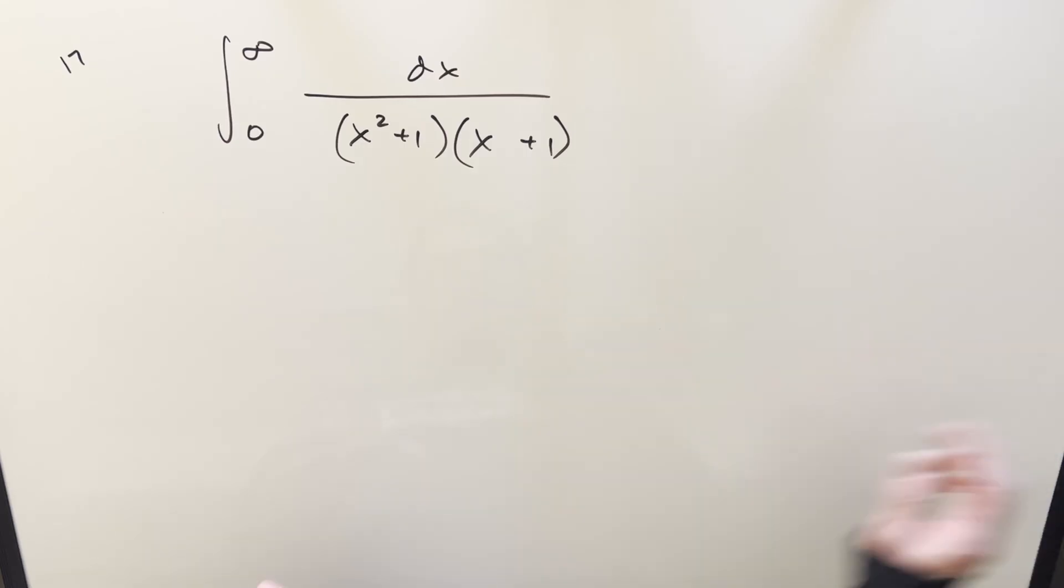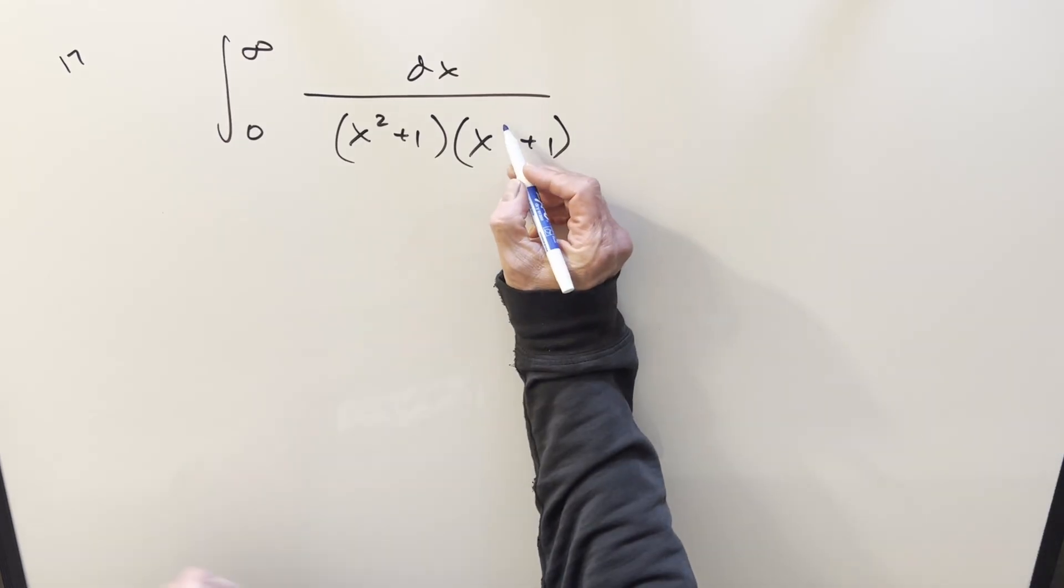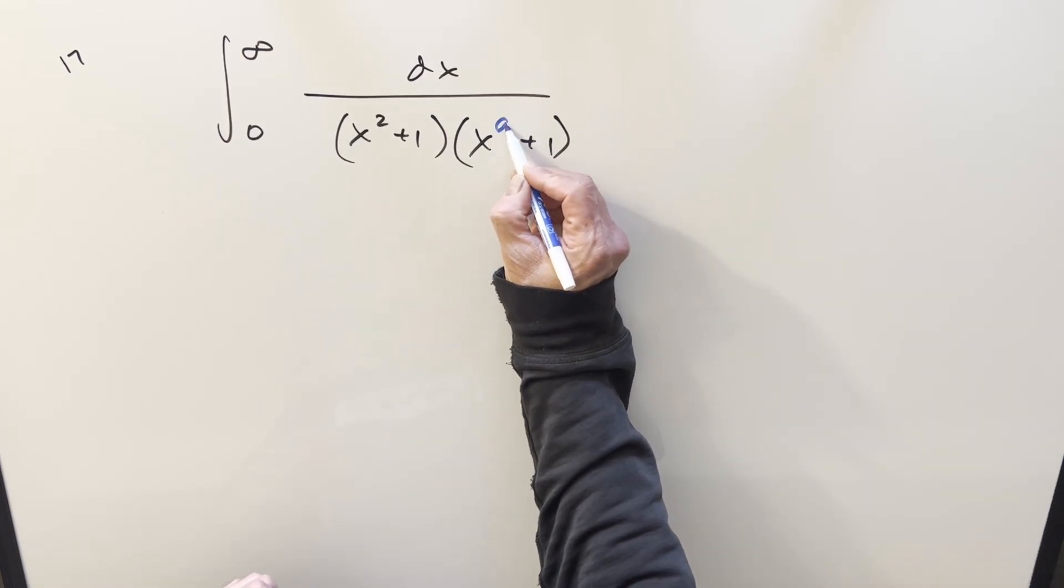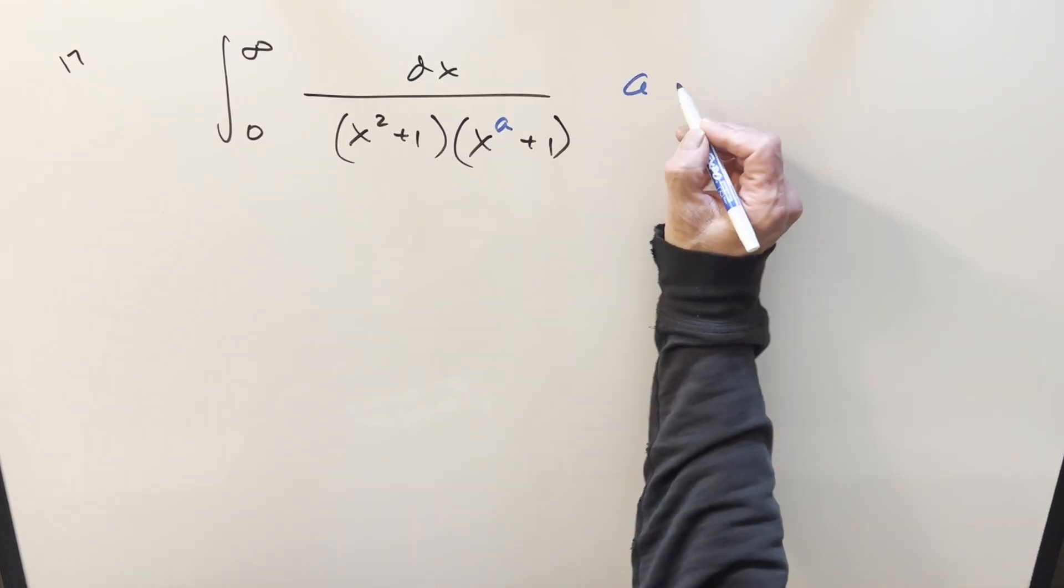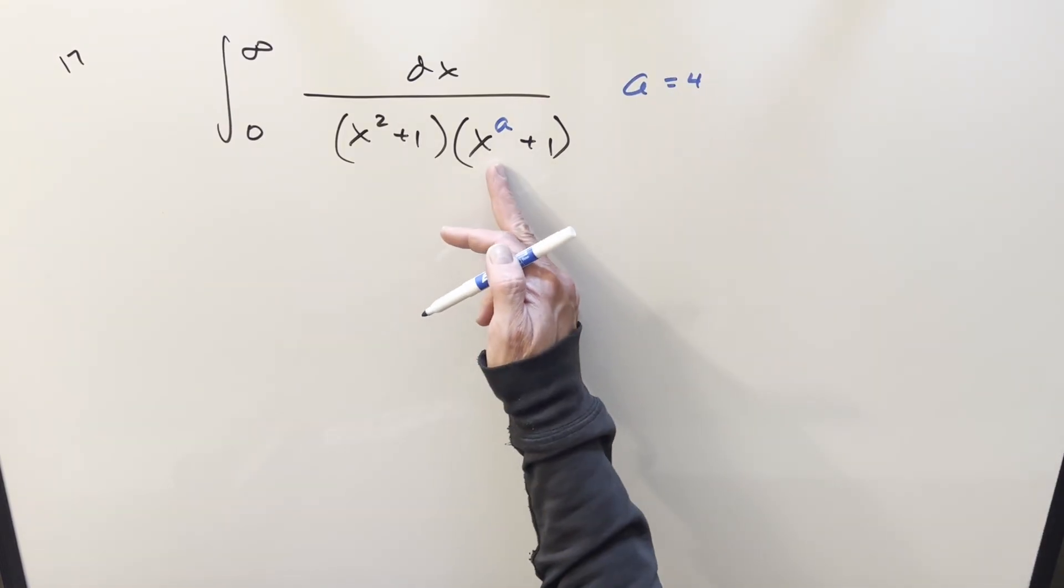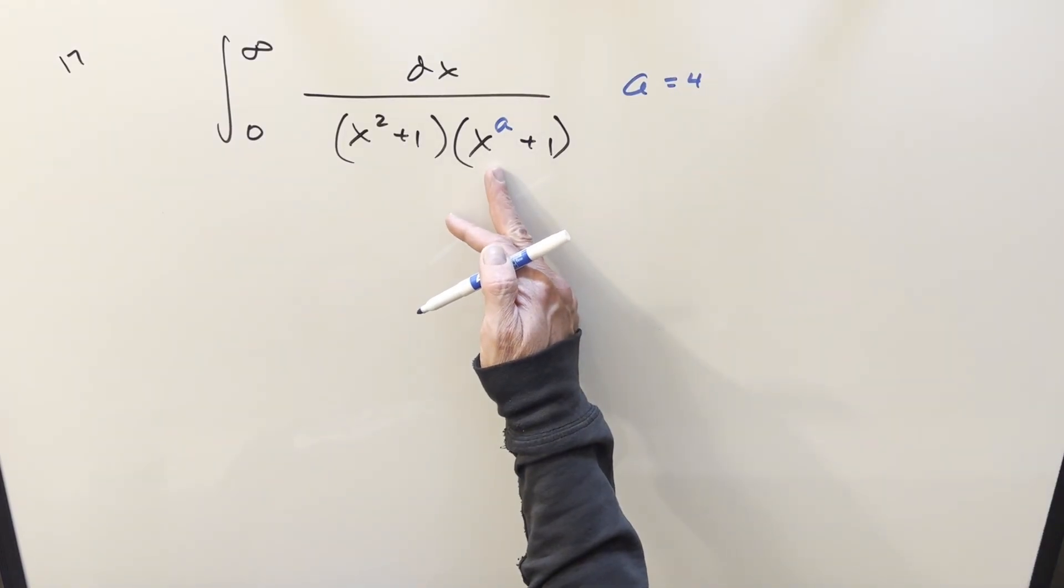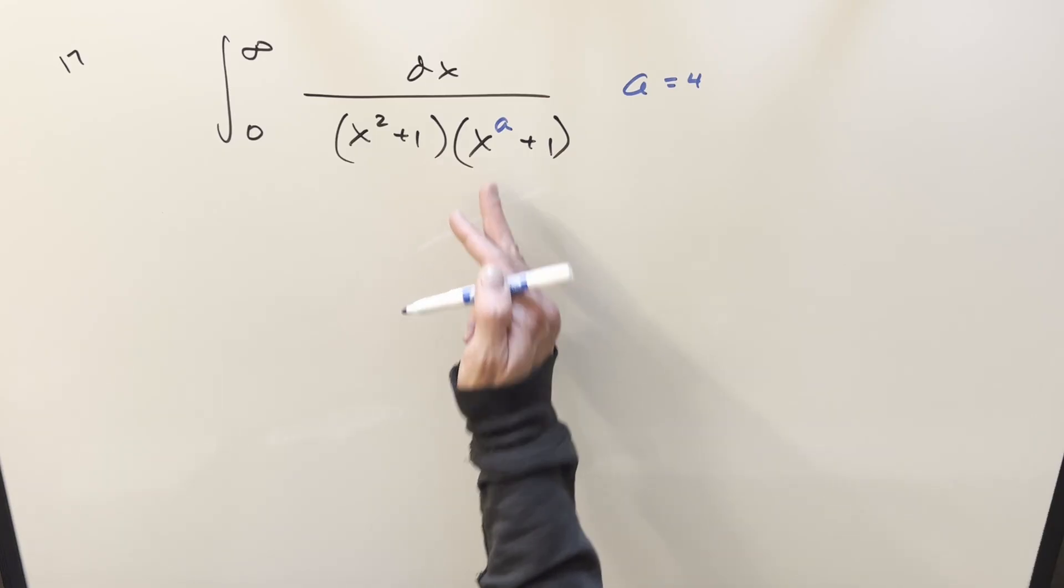So let's just try to generalize this a little bit more. Instead of 4, let's just call it something. Let's call this a. We'll come back and fix it later. We'll just remember a is 4. There may be some restrictions, but I think for some values of a, it just doesn't matter. So we'll just label it like that.